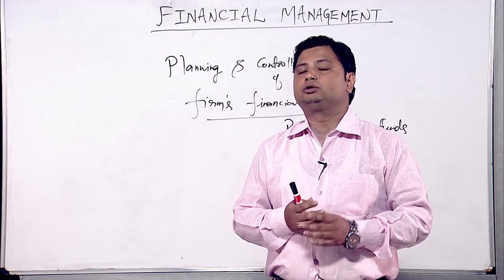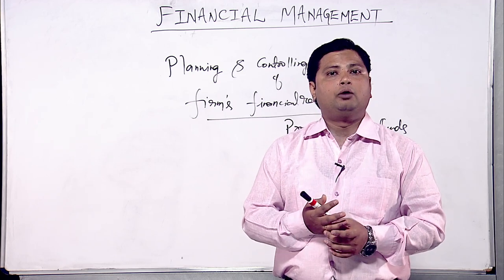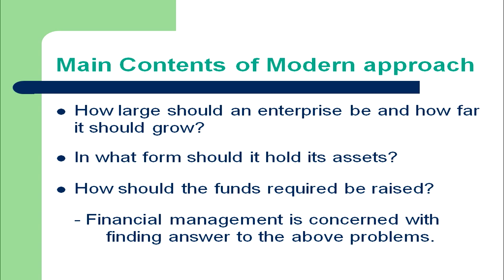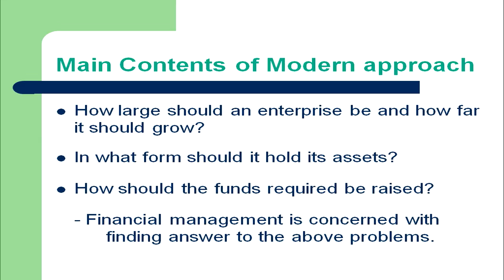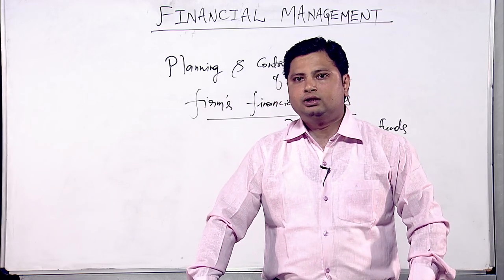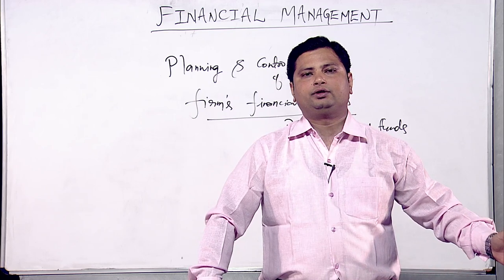The modern approach addresses three main questions: how large should an enterprise be and how far should it grow; in what form should it hold its assets — tangible or intangible; and how should the required funds be raised from the different sources available in the capital market? This concludes the discussion of the scope and approaches of financial management.